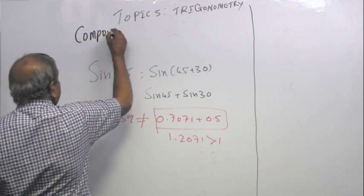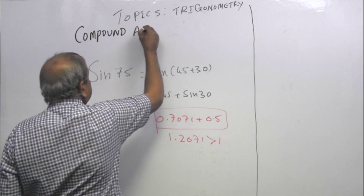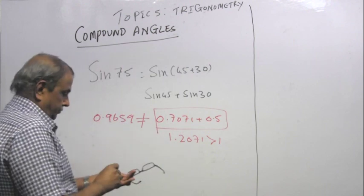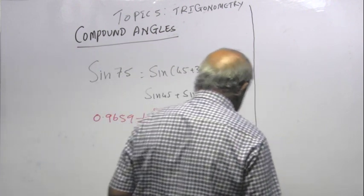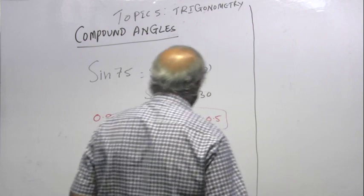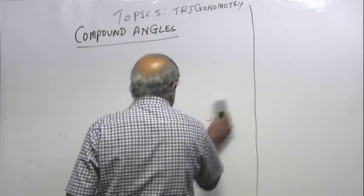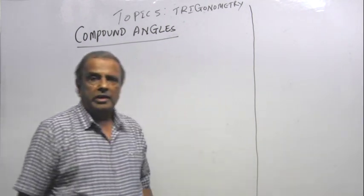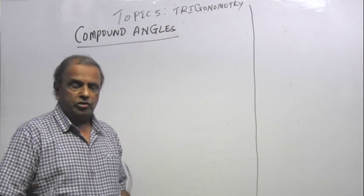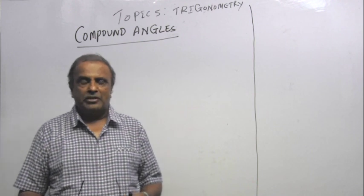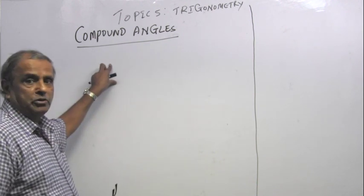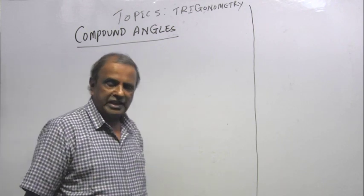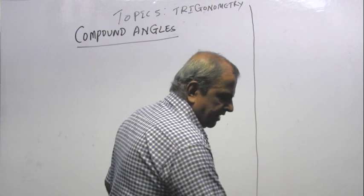That means two angles are added together. Compound angles. I want to look at sin of A plus B. I am going to spend this lesson trying to, you need not, I think students in India might have to know how to prove this formula.